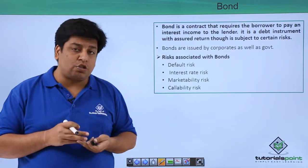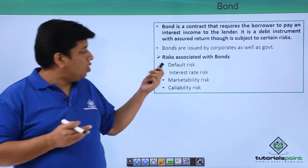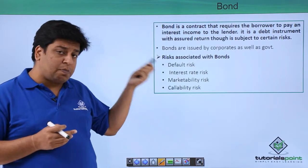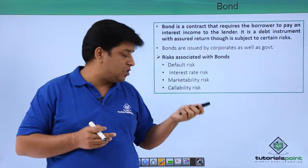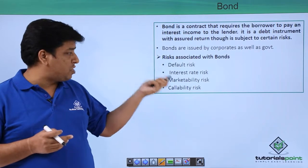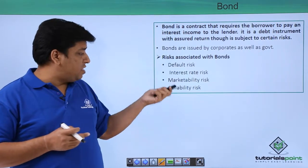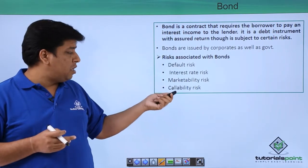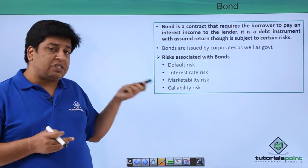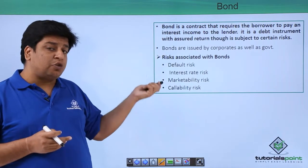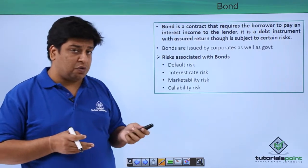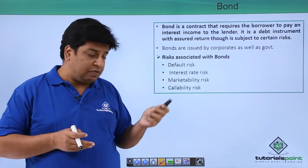Since bonds are issued by governments as well as corporates, let's understand the different types of risk associated with bonds: default risk, interest rate risk, marketability risk, and callability risk. We are going to see all these four risks in a future video.